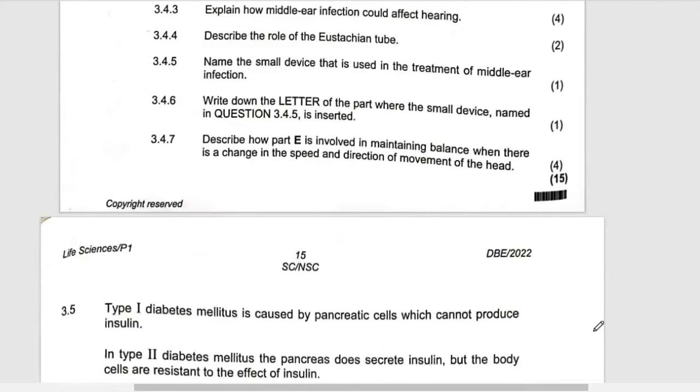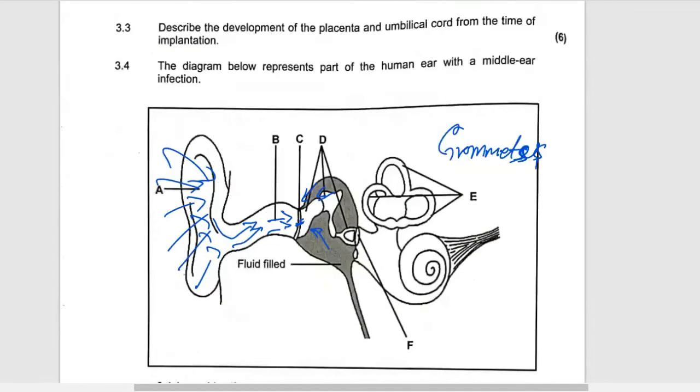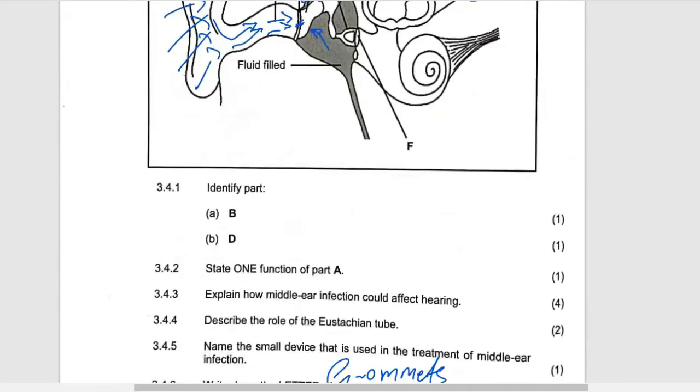Then lastly, but not least, they're asking you to write the letter of the part where the small device named above, which is the grommet. We say that these are grommets, which is where is it supposed to be inserted. It's supposed to be inserted in the tympanic membrane. And then if you look at this, it is part C.